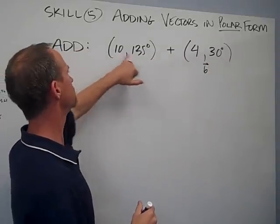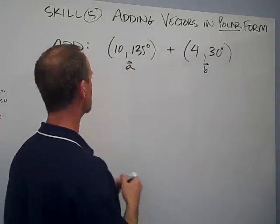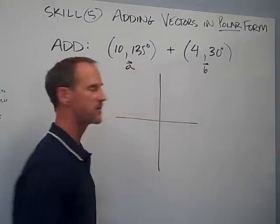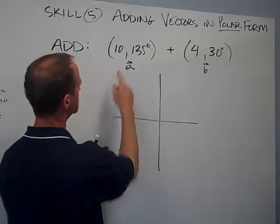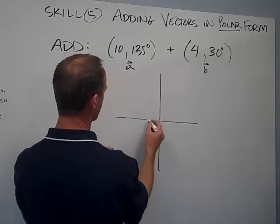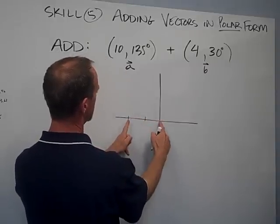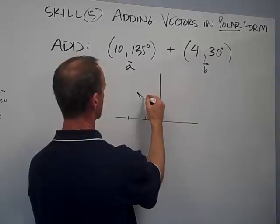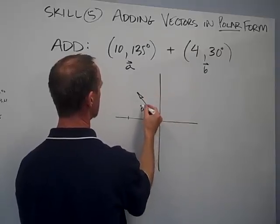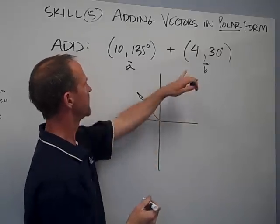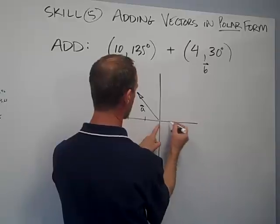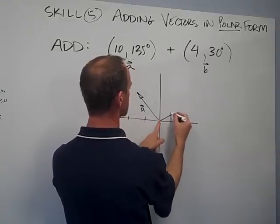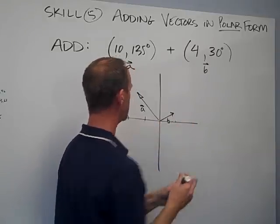Each is a magnitude and a direction. To graph this, we can sketch a quick axis. We plot Vector A — if that's 5, a length of 10 at 135 degrees puts it about right there. My second vector is 4, so if that's 5, that's about 4, and at 30 degrees that vector is like that.